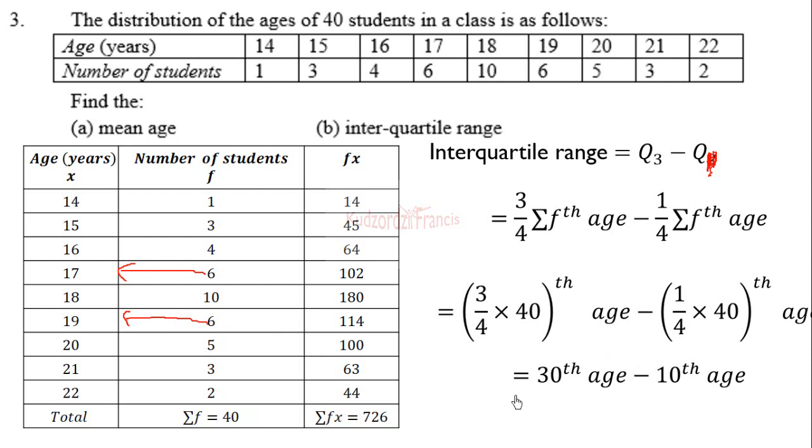So the interquartile range of the ages will be 19 years minus 17 years, which will be 2 years. So that is how we find the interquartile range from the frequency table.